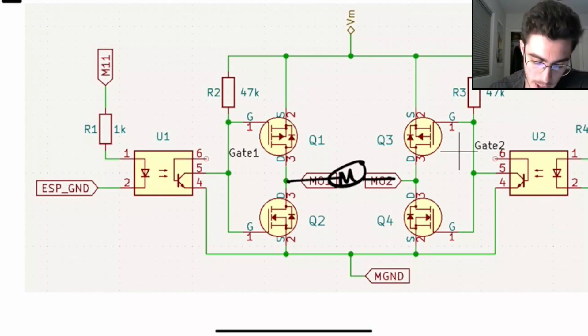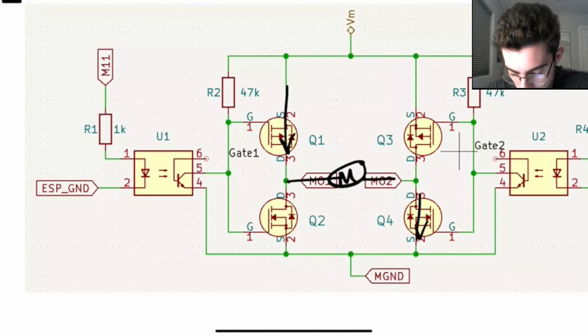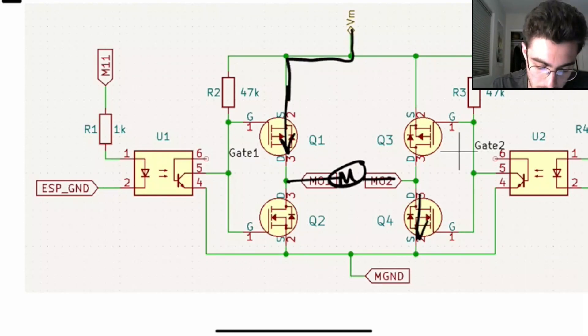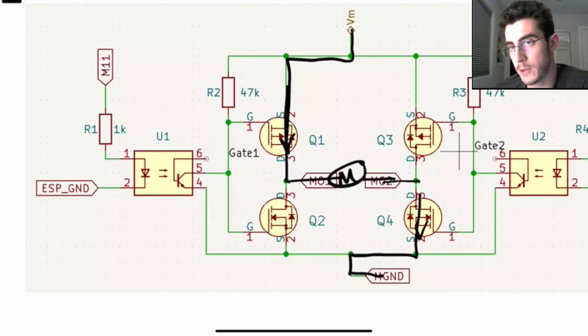Now let's say you turn on Q1. So then you have current going through here. And let's say you turn on Q4. Then you have current going through here. You now have a complete current path through the motor. And this will cause the motor to spin.